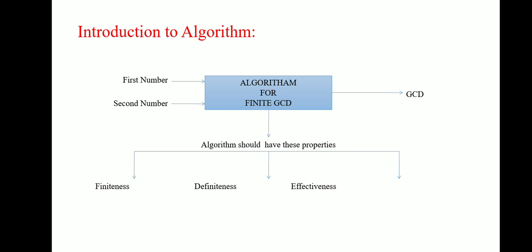In this case, there are two inputs. These inputs are named as first number, second number and output is greatest common divisor.